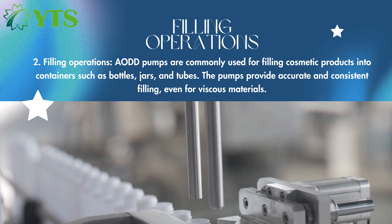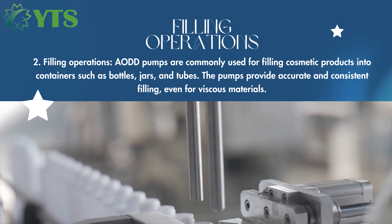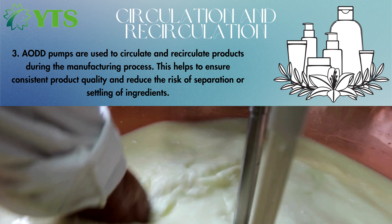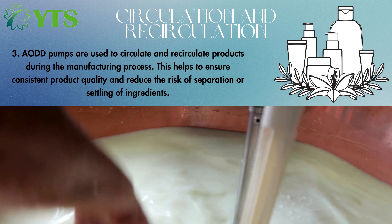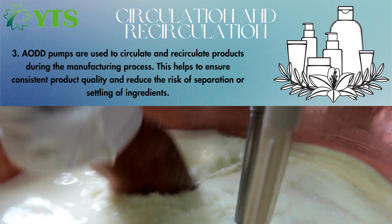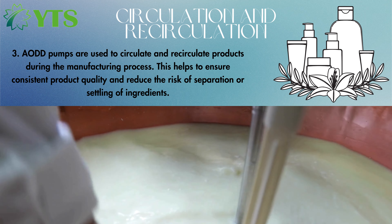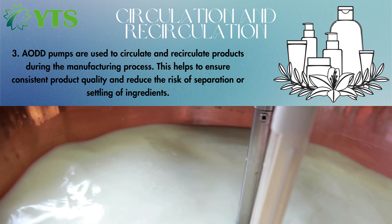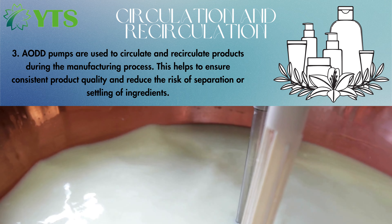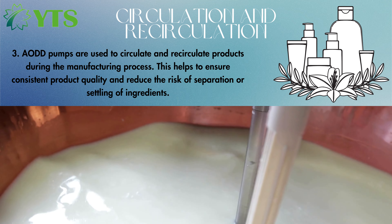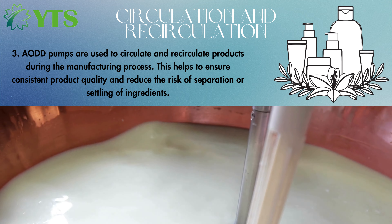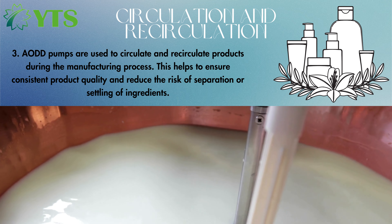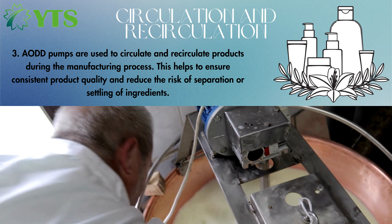3. Circulation and recirculation. AOD pumps are used to circulate and recirculate products during the manufacturing process. This helps to ensure consistent product quality and reduce the risk of separation or settling of ingredients.